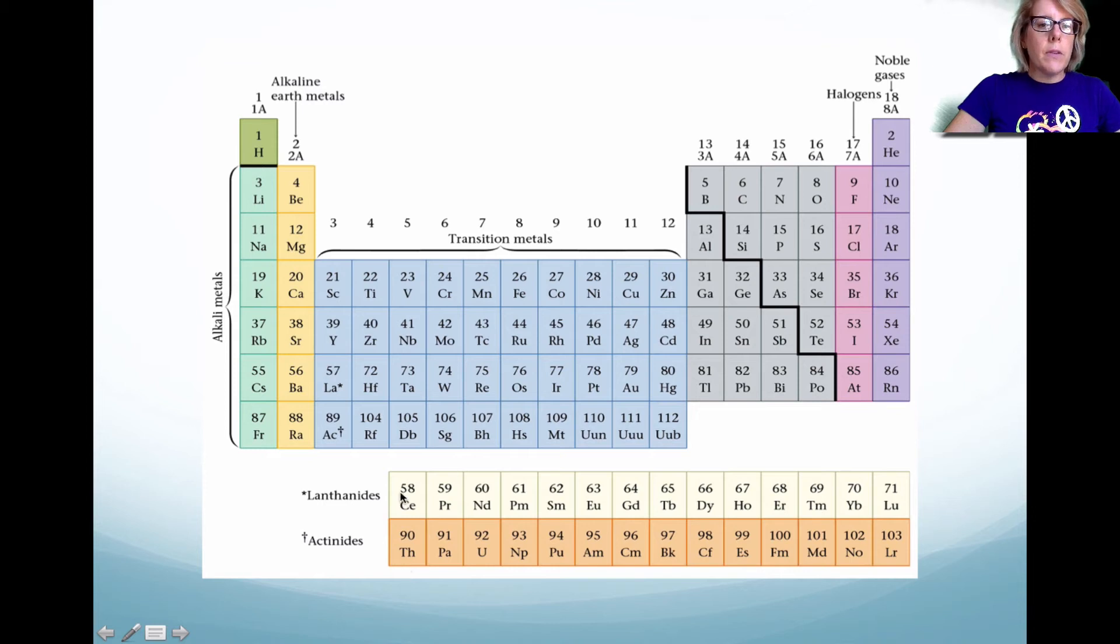Okay, this is actually from your book. And I highly recommend you look at this carefully. This first group here is the alkali metals. And it's all the ones that are listed in green. And then the second group here is alkaline earth metals. And notice that they're all in yellow.